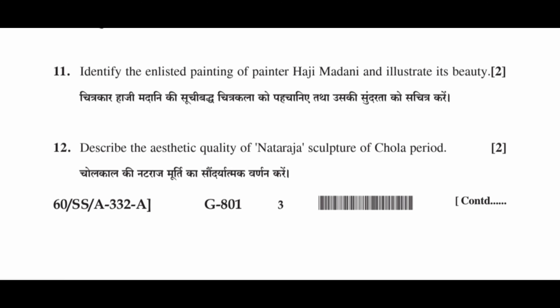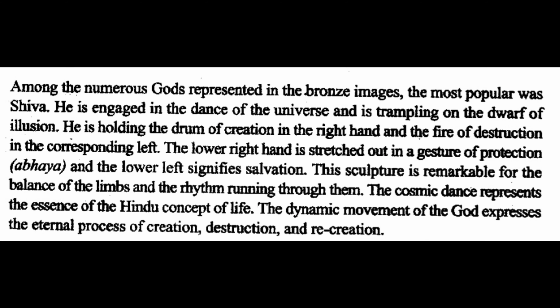Question 12: Describe the aesthetic quality of the Nataraja sculpture of the Chola period. Among the numerous forms represented in bronze images, the most popular was Shiva. He is engaged in the dance of the universe and is trampling on the dwarf of illusion. He holds the drum of creation in his right hand and the fire of destruction in the corresponding left. The lower right hand is stretched out in a gesture of protection, and the lower left signifies salvation. This sculpture is remarkable for the balance of the limbs and the rhythm running through them. The cosmic dance represents the essence of the Hindu concept of life, and the dynamic movement of the god expresses the eternal process of creation, destruction and recreation.